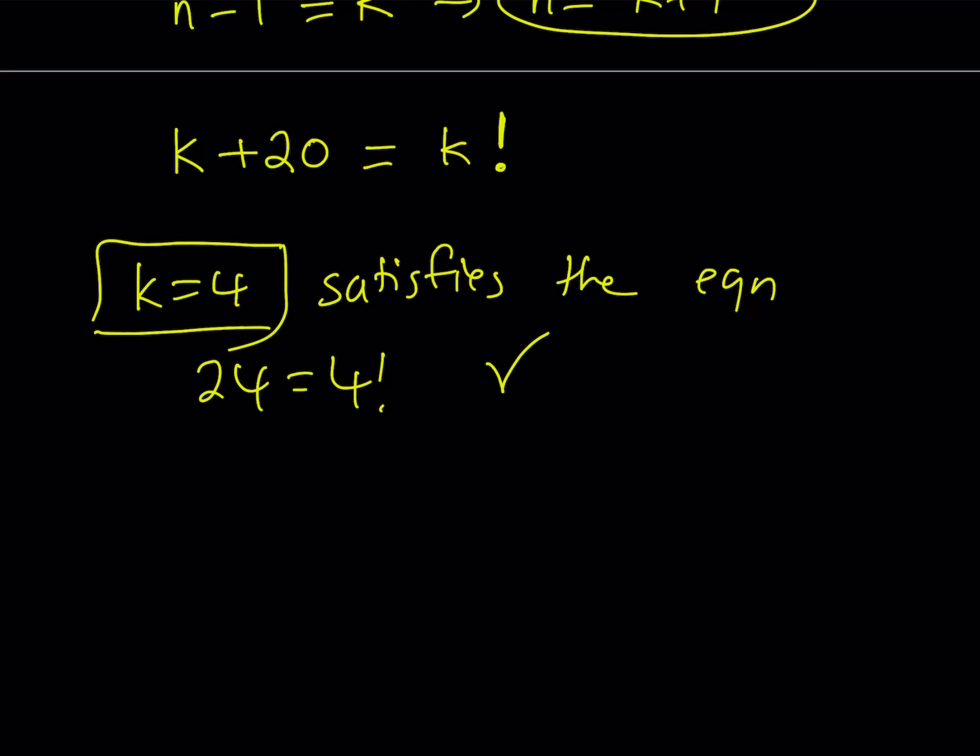We're going to look at the right-hand side, k factorial, and left-hand side k plus 20. As k increases, if k is greater than 4, obviously like k equals 5, 5 factorial is 120, 6 factorial is 720, and 7 factorial is 5040, and so on. So they get larger faster.